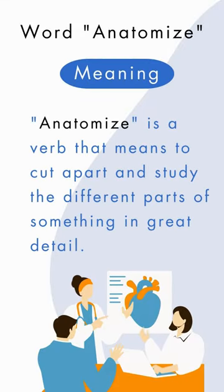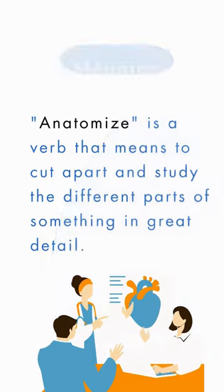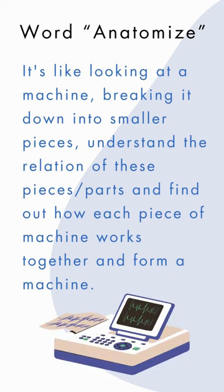Anatomize means to cut apart and study the different parts of something in great detail. It's like looking at a machine, breaking it down into smaller pieces, understanding the relation of these pieces or parts, and finding out how each piece works together to form a machine.